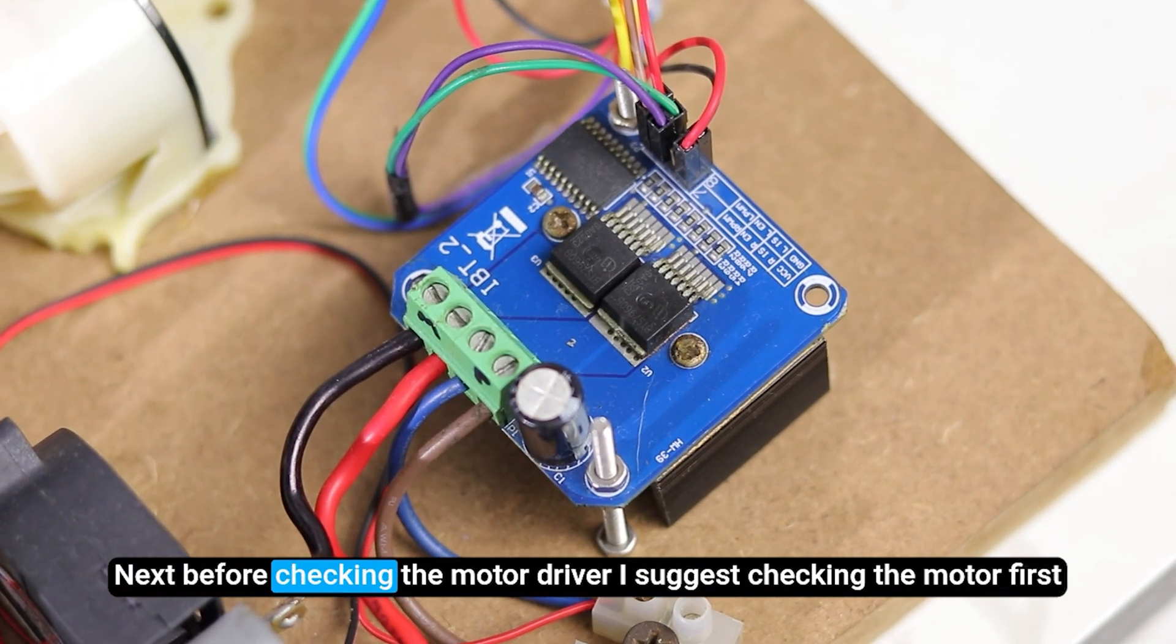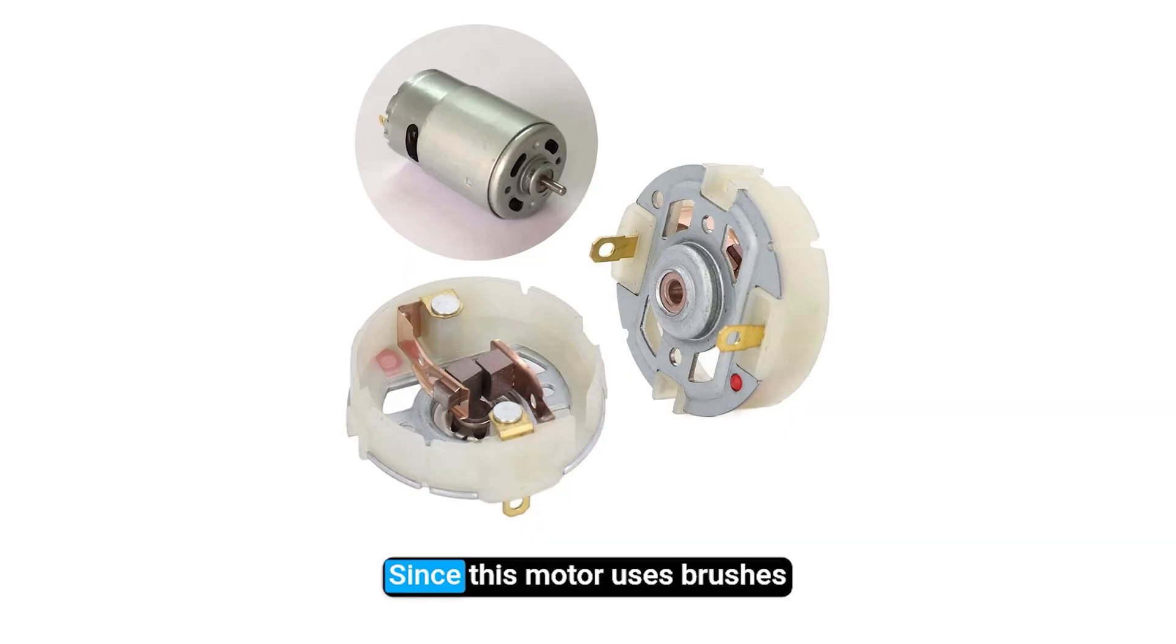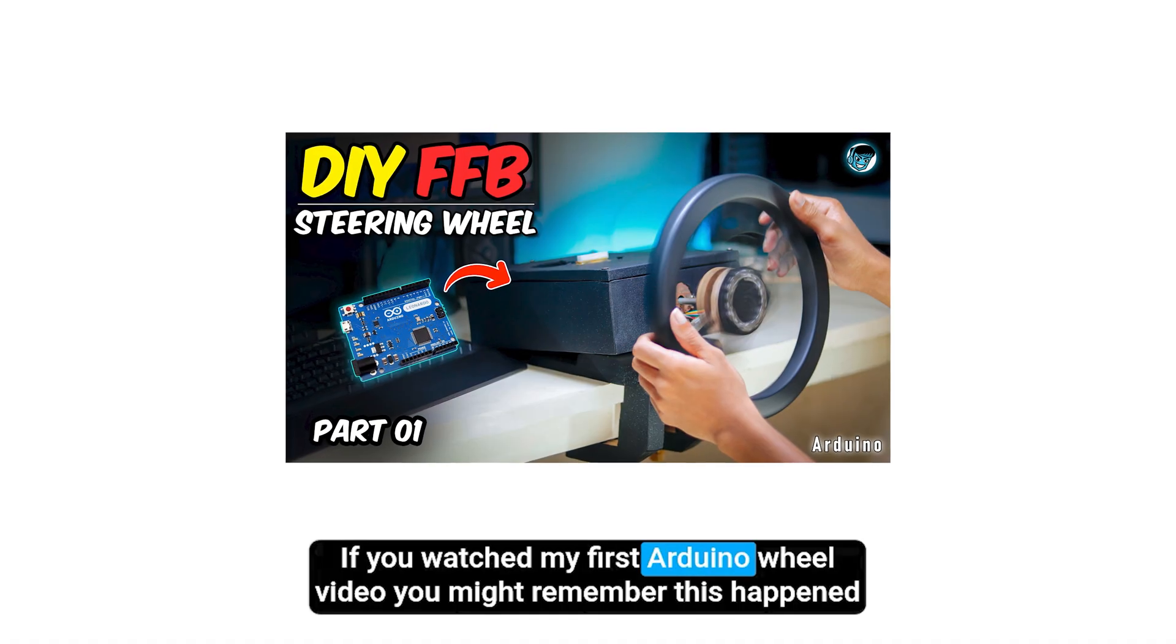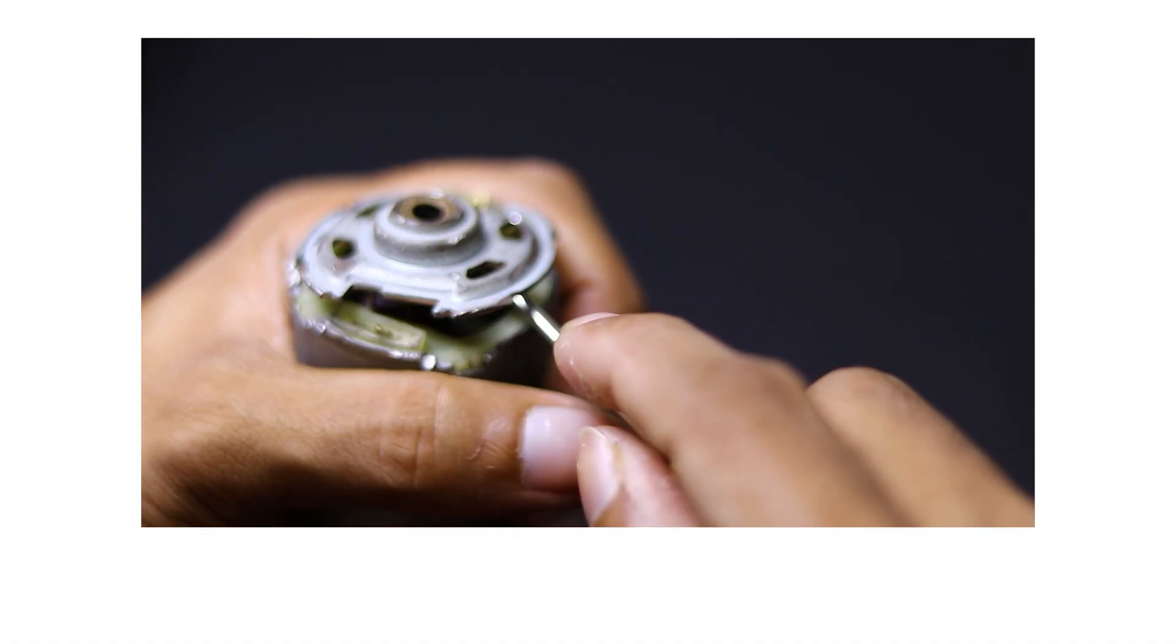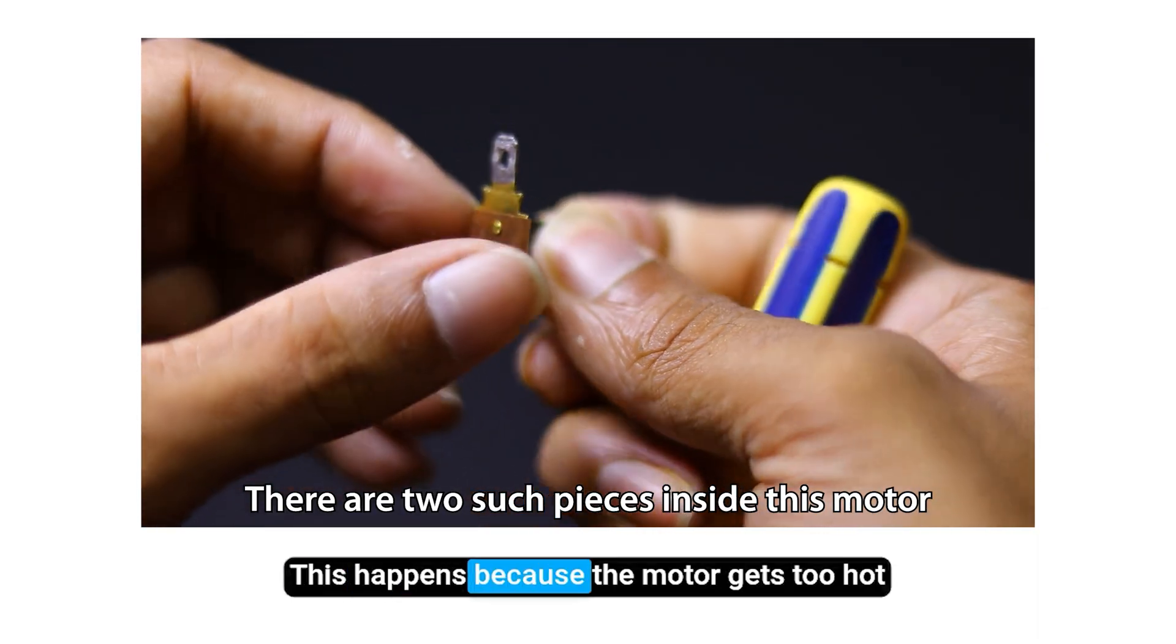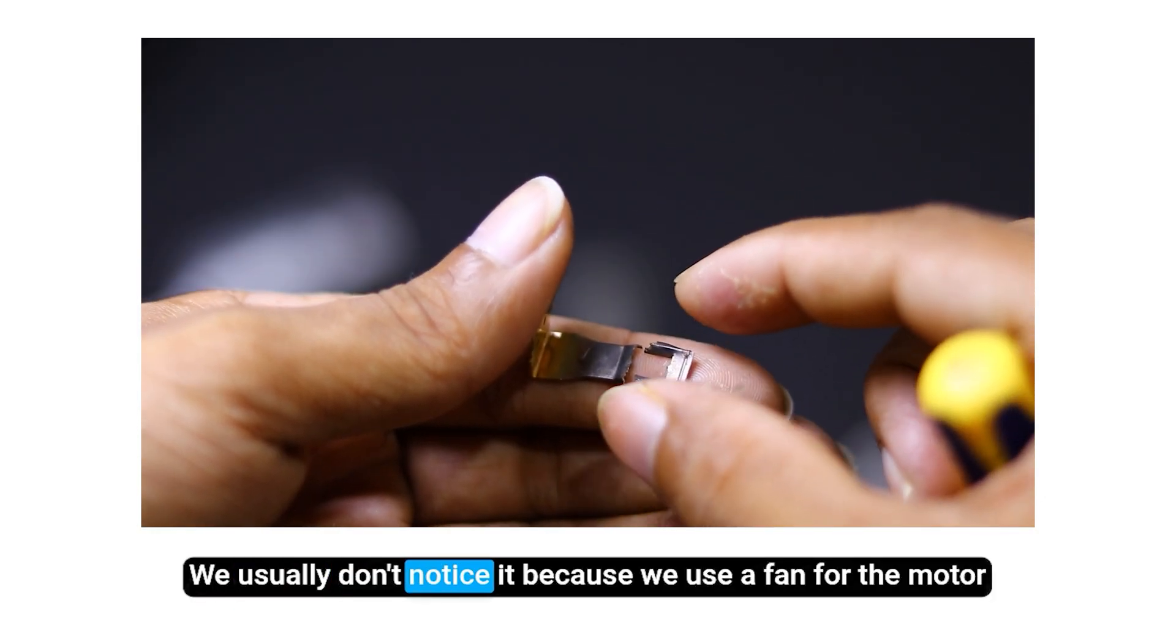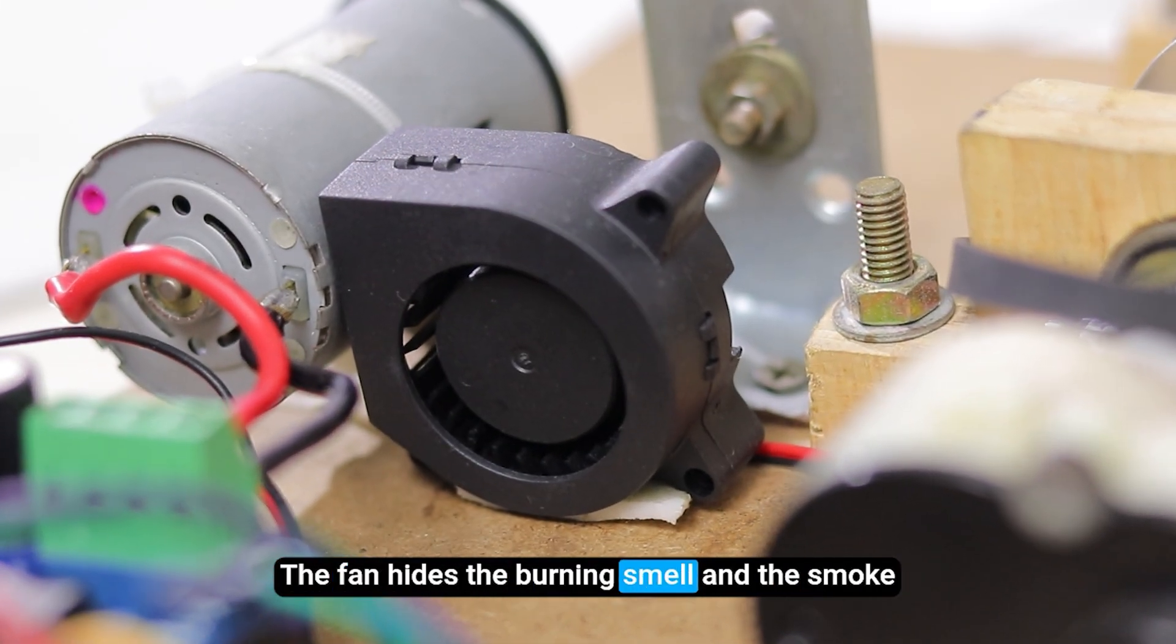Next, before checking the motor driver, I suggest checking the motor first. Since this motor uses brushes, the brushes can wear out over time, and they can even break if the motor overheats. If you watched my first Arduino wheel video, you might remember this happened. This happens because the motor gets too hot. We usually don't notice it because we use a fan for the motor. The fan hides the burning smell and the smoke.